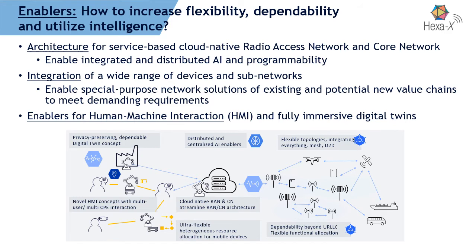To increase flexibility, dependability, and intelligence within the network, we aim from an architecture point of view for a fully service-based, cloud-native RAN and core network. This enables integrated and distributed AI and programmability throughout the whole network, and helps integrate a wide range of devices and sub-networks with demanding requirements, especially in the vertical domain. We also look into new human-machine interaction enablers and fully immersive digital twins, particularly within Work Package 7.